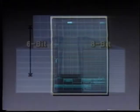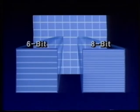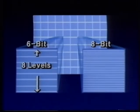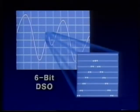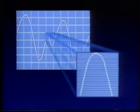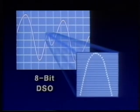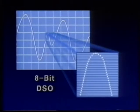Comparing 6-bit to 8-bit resolution over one division, we find that 6-bit A-to-D converters distinguish 8 levels per division while an 8-bit A-to-D converter distinguishes 25 levels. This illustrates what one division of a waveform would look like on a 6-bit scope versus an 8-bit scope. With more levels available, the 8-bit reconstruction is more faithful to the original wave shape, giving users higher confidence in their measurements.